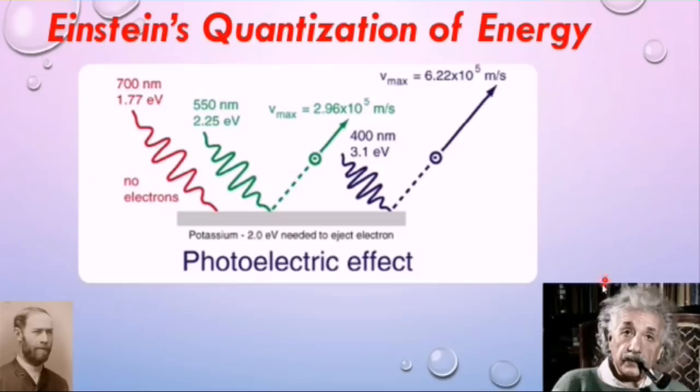Albert Einstein explained photoelectric effect on the basis of quantum theory. When suitable frequency of light is incident on metal surface, electrons are emitted. These are called photoelectrons and phenomena is known as photoelectric emission or photoelectric effect.